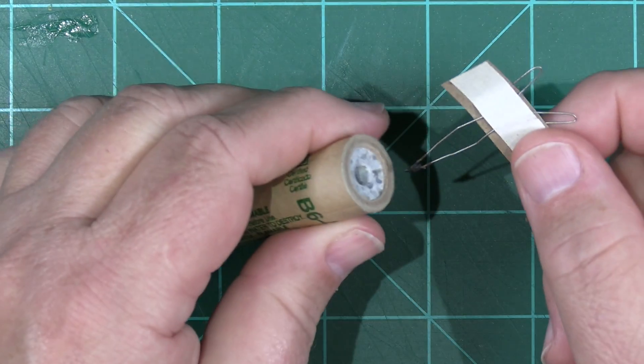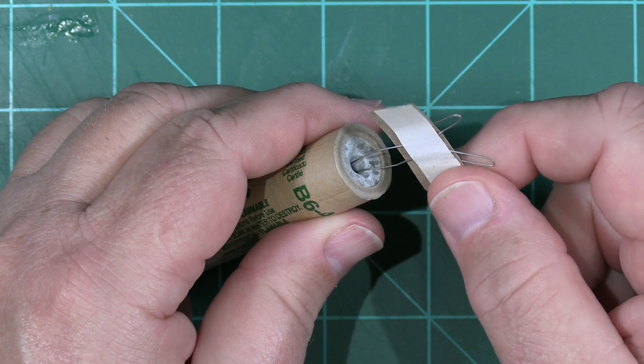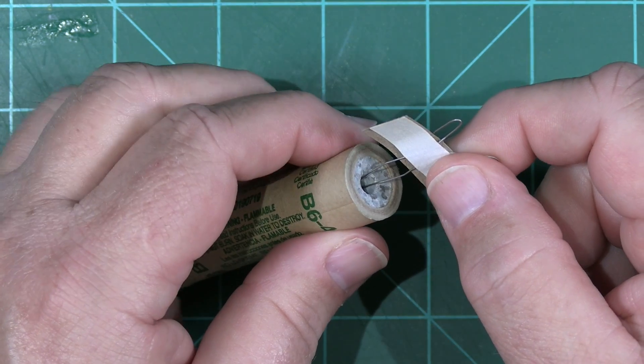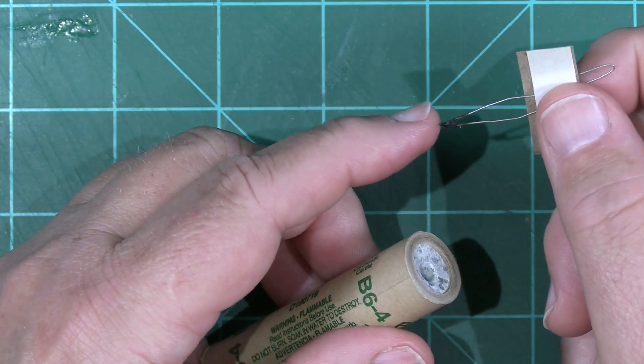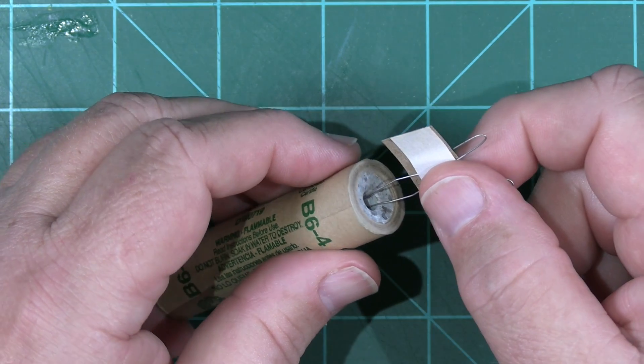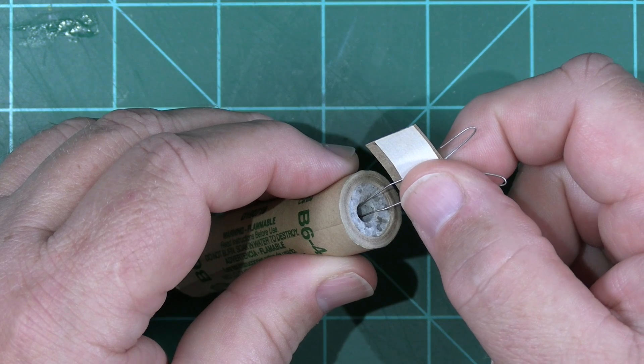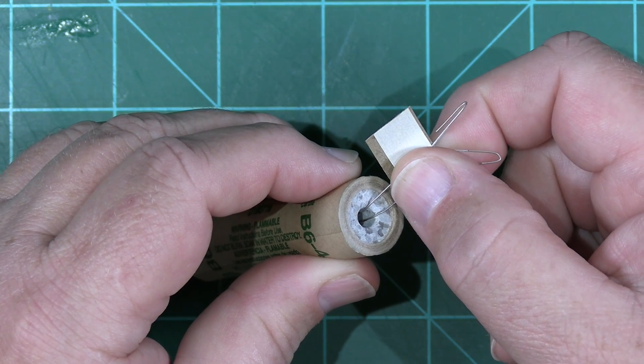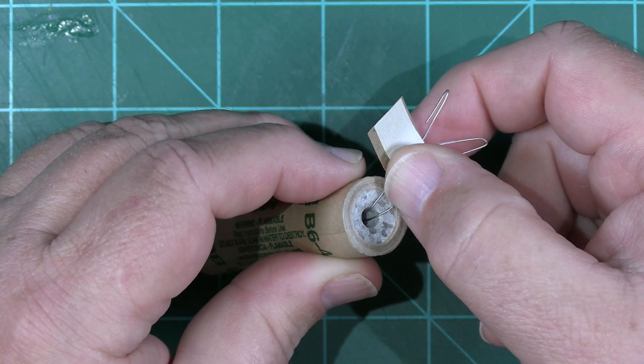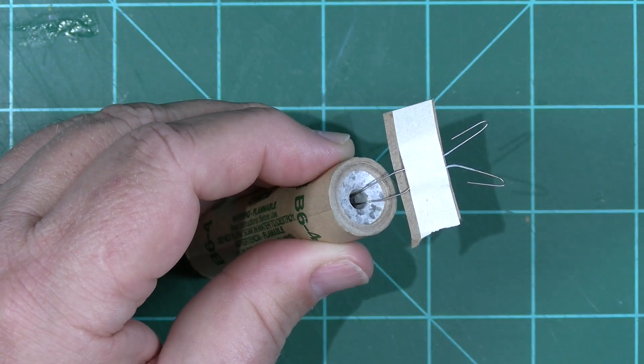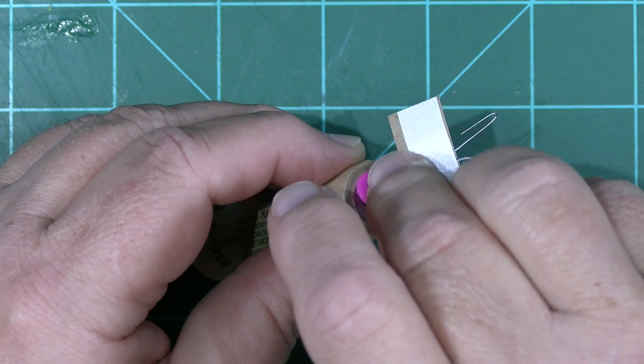Next, take the prepared igniter and set it into the nozzle of the motor, making sure that the pyrogen end, the blob, is in contact with the propellant inside. In other words, make sure it won't go in any further. Bend it over, and then place the igniter plug into place.